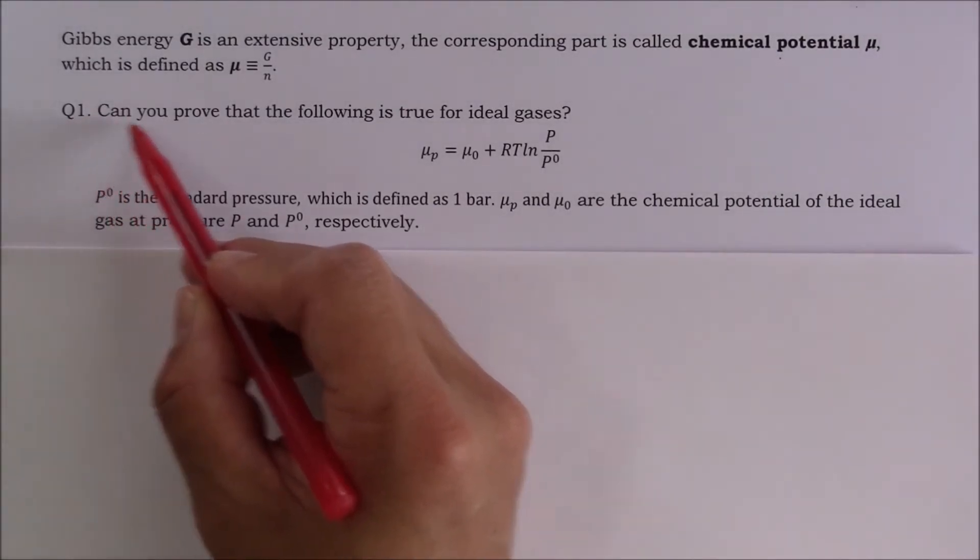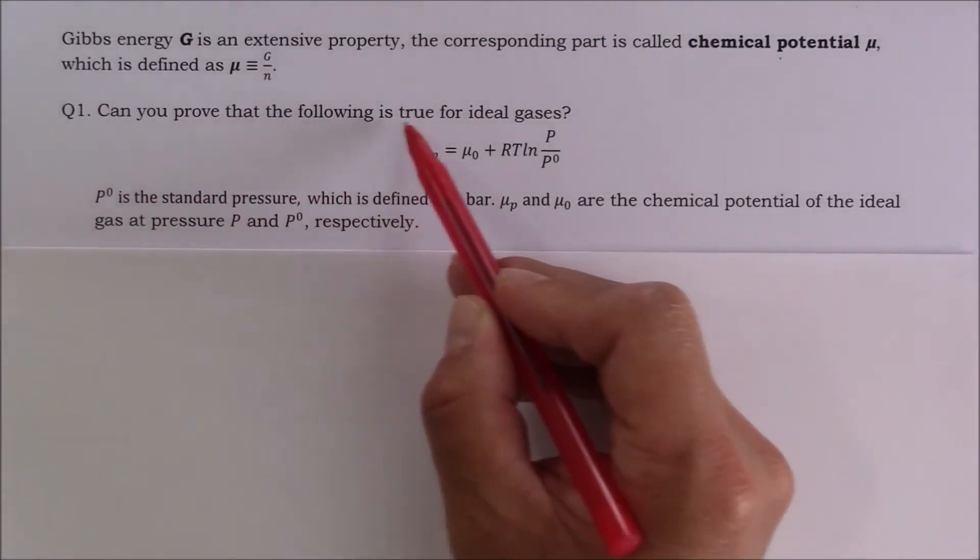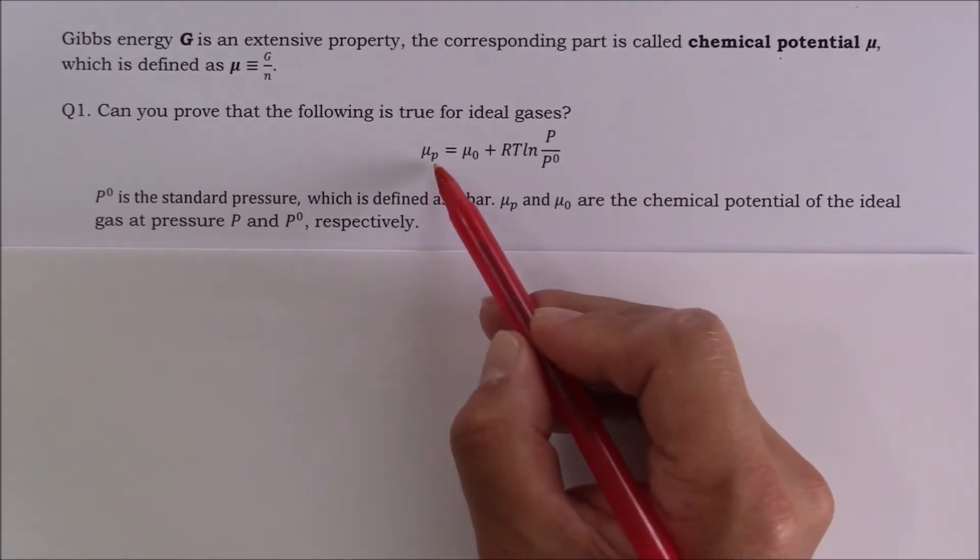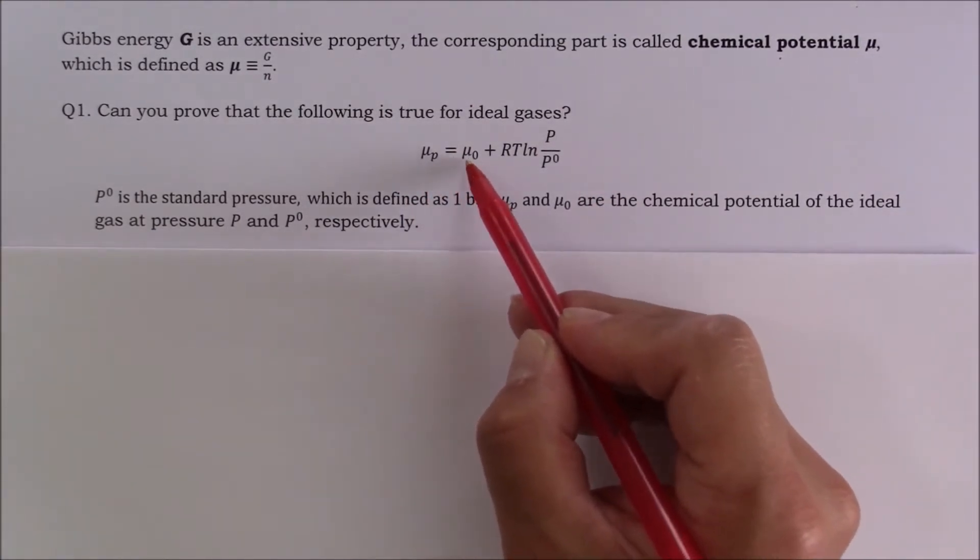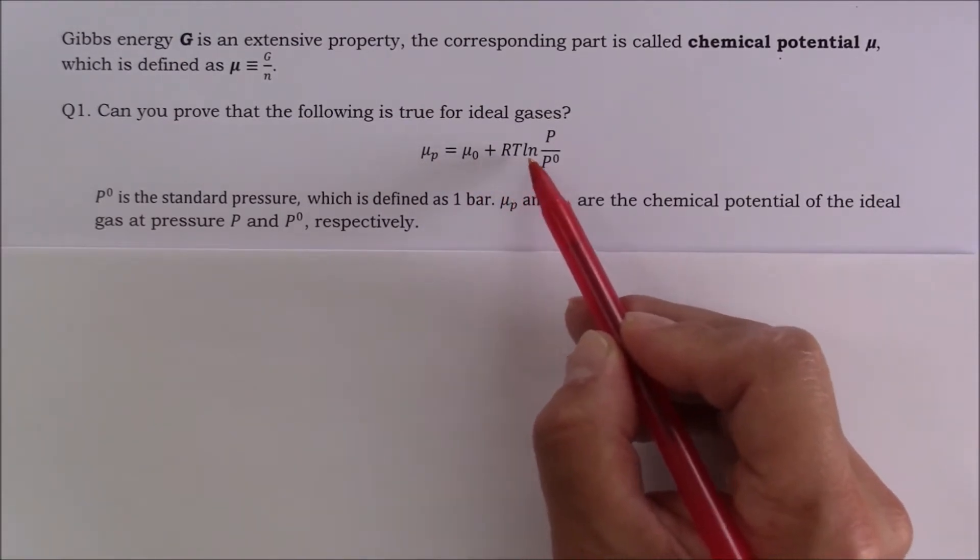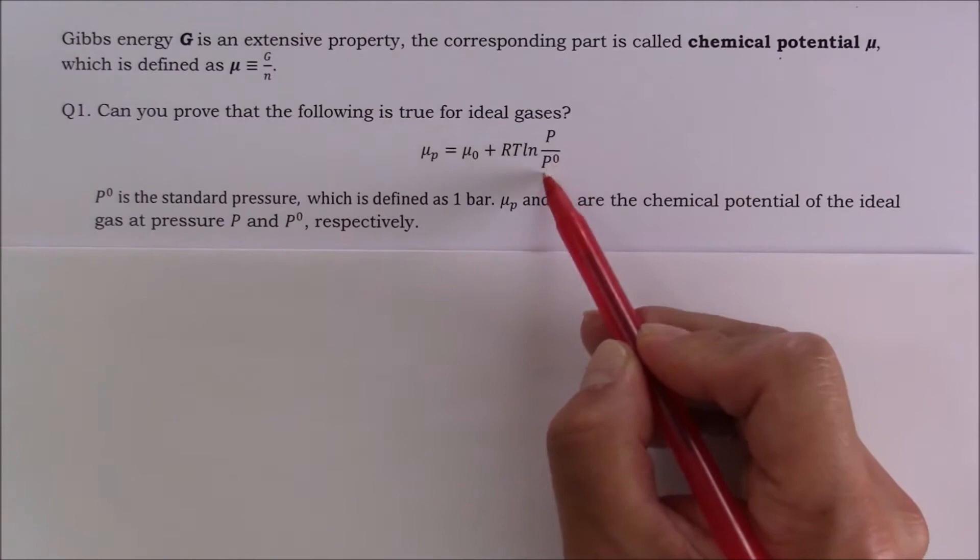Question number 1. Can you prove that the following is true for ideal gases? The chemical potential at pressure P is equal to the chemical potential at P0 plus RT natural log P over P0.